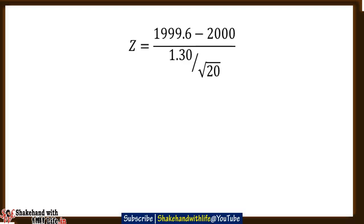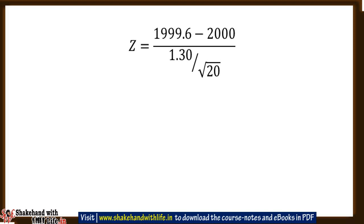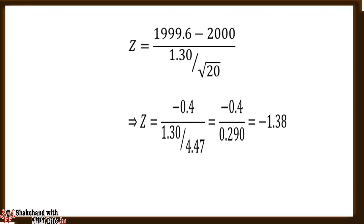Now take the second case when the sample size is 20. To calculate the Z statistic, we substitute n equals 20 in the formula. Z equals 1999.6 minus 2000 in the numerator, divided by 1.30 divided by the square root of 20 in the denominator. After processing, the Z statistic equals minus 1.38. Now calculate the p-value and compare it with alpha of 5 percent as in the first case.